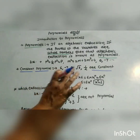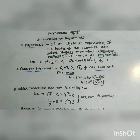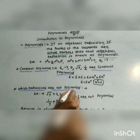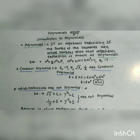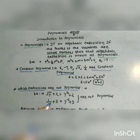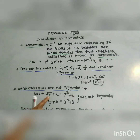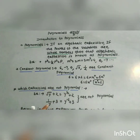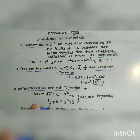Which expressions are not polynomials? When the power or index of a variable is not a whole number, the expression is not a polynomial. For example, if the power of y is one-half (not a whole number), or if the power of y is negative 1 (not a whole number), then these expressions are not polynomials.